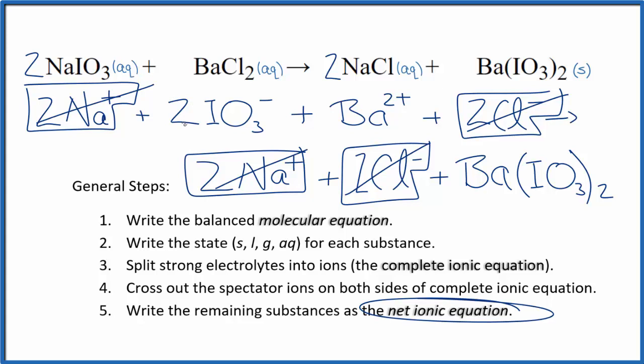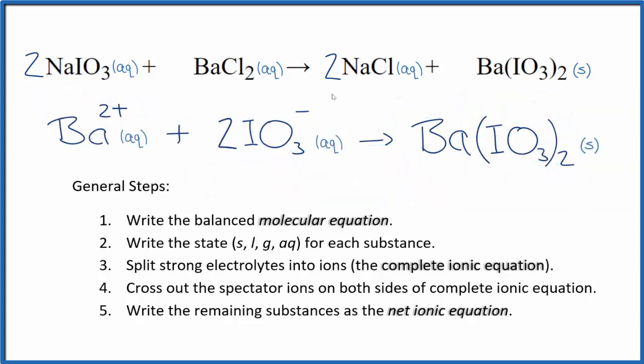I'll clean it up and write the states. We'll have our net ionic equation. So this is the balanced net ionic equation for sodium iodate plus barium chloride.